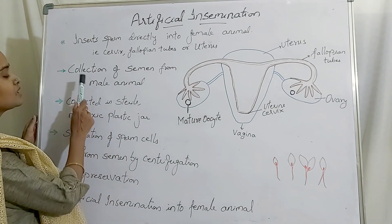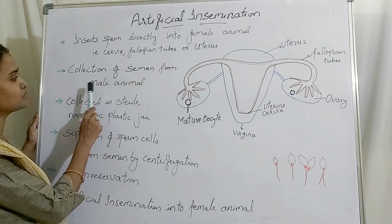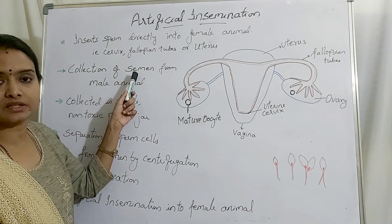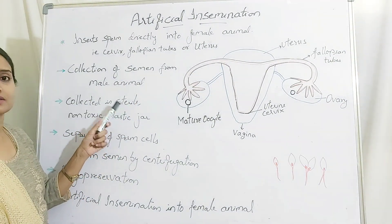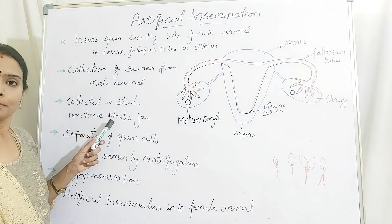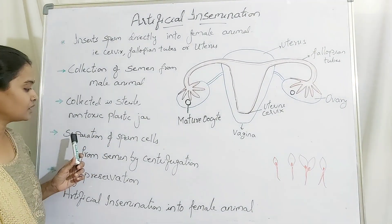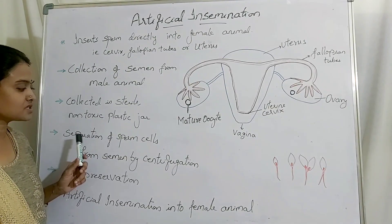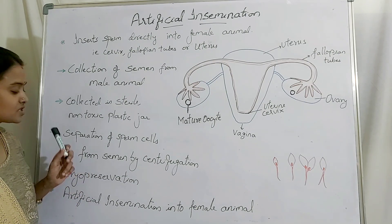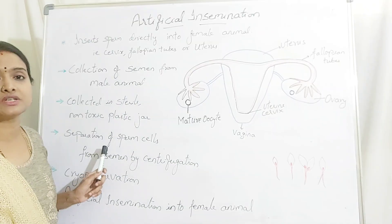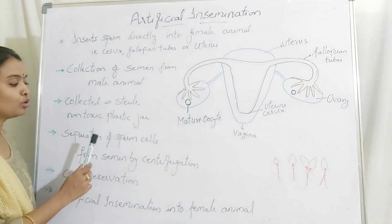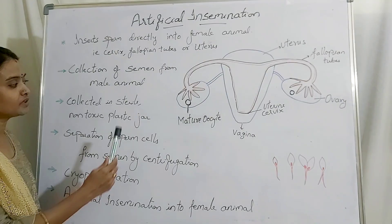First, there is the collection of the semen from the male animal. The semen has to be collected in a sterilized container or jar made of non-toxic plastic material. After collecting the semen, you separate the motile sperm cells by means of centrifugation.